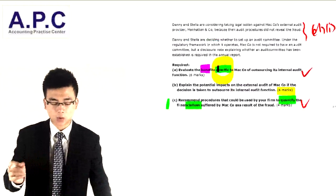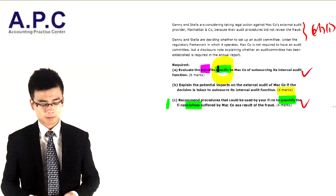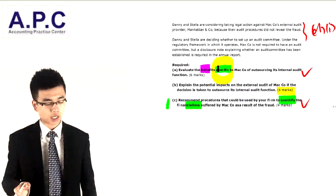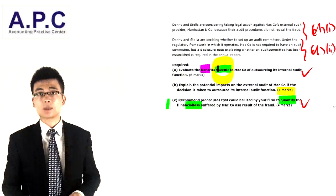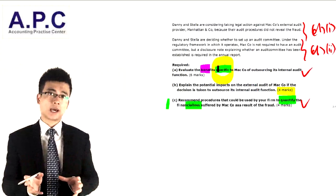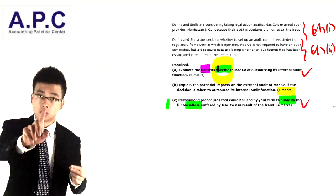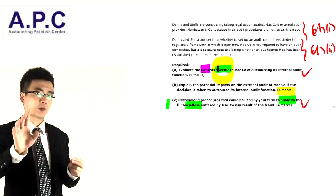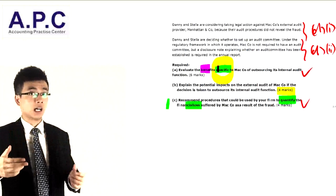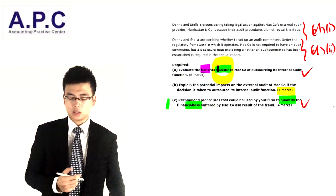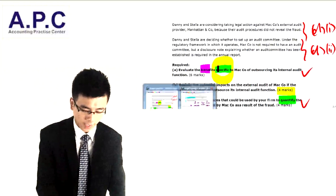Regarding the audit committee: under the regulatory framework that Matco operates in, it is not required to have an audit committee. But you can argue that setting up an audit committee would increase shareholder confidence in investment in the company. From a corporate governance perspective, shareholders want their money used effectively to generate returns — not stolen. Disclosing that an audit committee has been established will give shareholders more confidence.